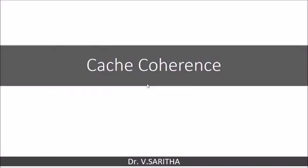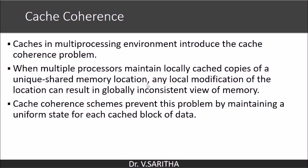In this video we are going to see the introduction to cache coherence. When we have multiple processors in a single system, there is a chance for a cache coherence problem because multiple processors will maintain their local cache memories of a shared memory. When a particular processor uses a copy from its local cache and updates it, there is a chance of inconsistency in the information. There are many schemes, called cache coherence schemes, to prevent this problem.